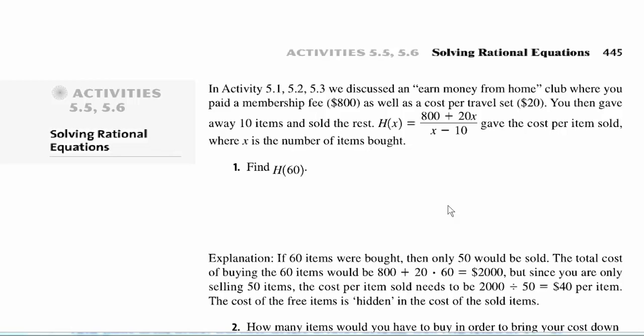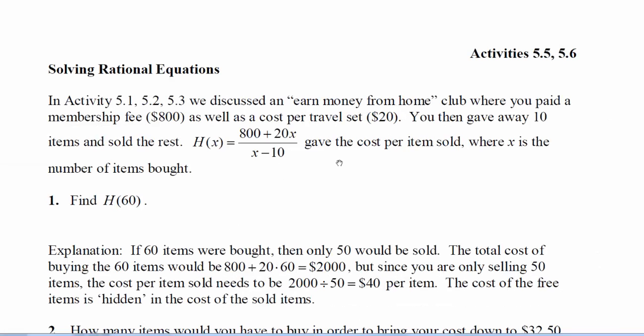So on page 445, we begin with activity 5.5, 5.6. We actually revisit that travel from home club where we had the average cost equal to 800 plus 20x over x minus 10. We're going to revisit this problem.